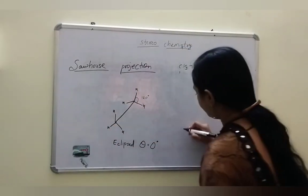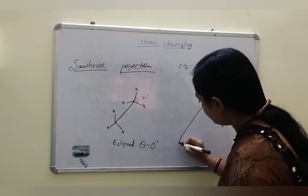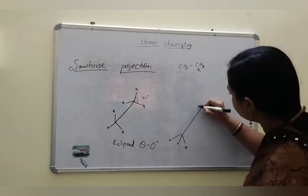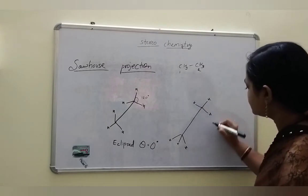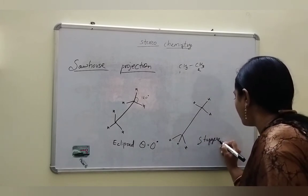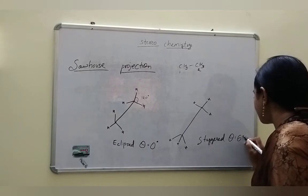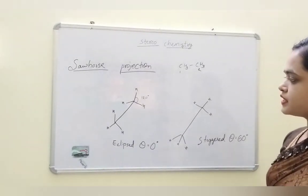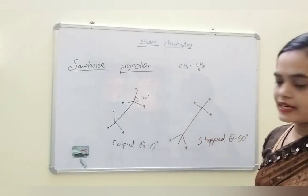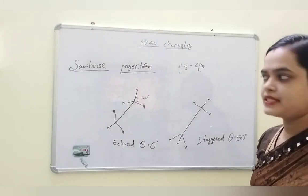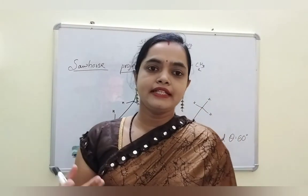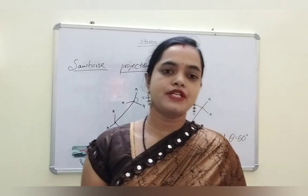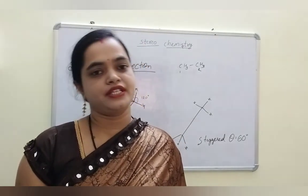Another form is the staggered form. In the staggered form, each carbon has three hydrogens, and the dihedral angle theta is close to 60 degrees. In Sawhorse projection, the bonds formed between carbons are slightly tilted, and both eclipsed and staggered forms are present. To understand organic compounds better, we draw these structures in three-dimensional forms using Newman's projection, Sawhorse projection, and Fischer's projection. Thank you.